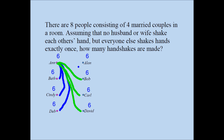Now let's figure out the total number of handshakes. There are eight people and each has six handshakes, so eight times six equals 48. However, there is a problem with this argument — if you stop here your answer would be wrong. There were not exactly 48 handshakes, and this is the challenging part of the problem.